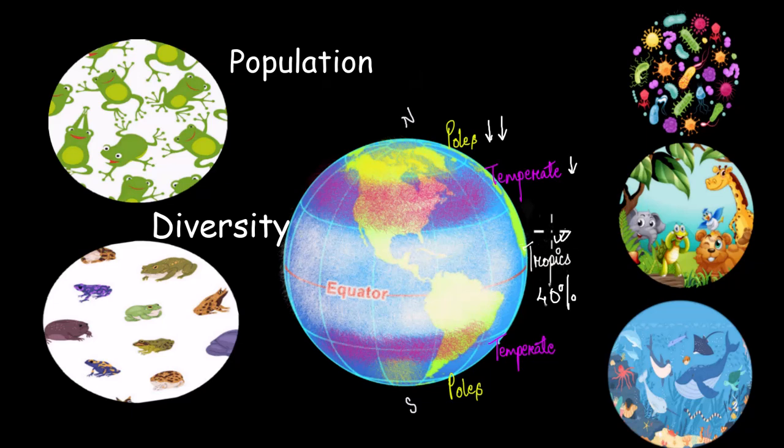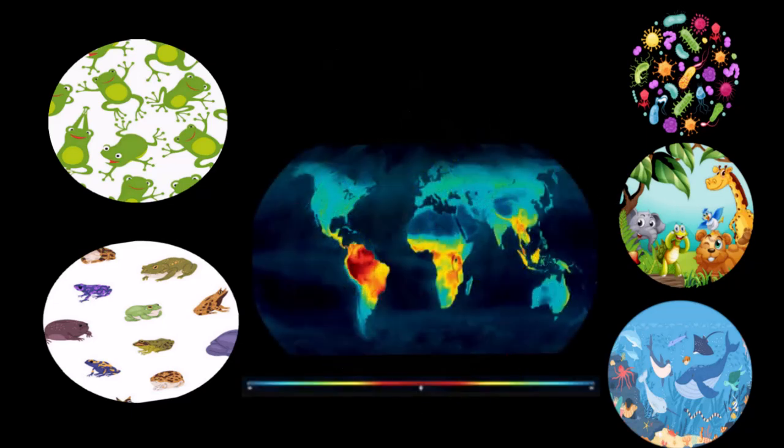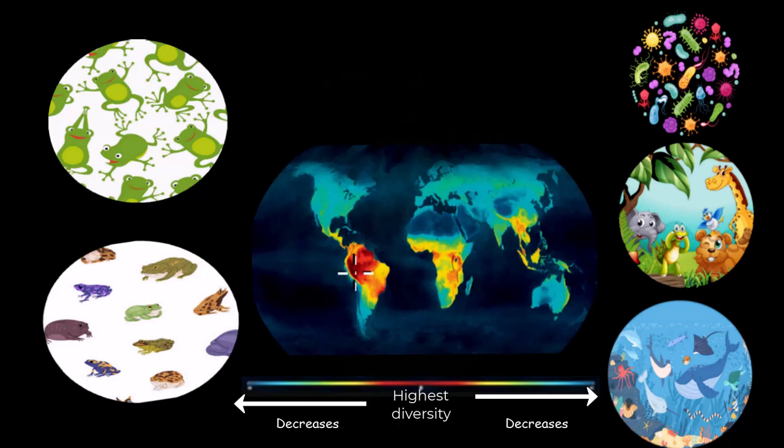Now let me bring to you another map that shows species diversity. Here, as you can see, as the color moves from red to blue, the diversity decreases. From the color you can tell that it depicts exactly what we just discussed.